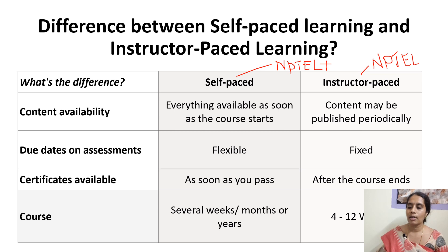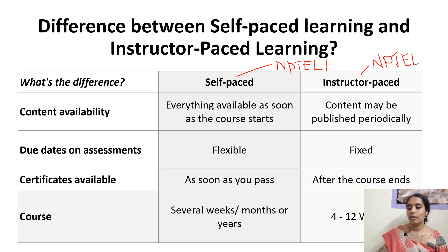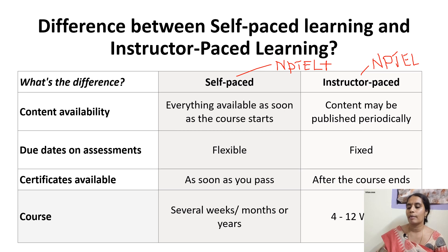Regarding due dates on assessments: instructor-paced learning (NPTEL) has a fixed due date for submissions. Whereas in self-paced learning, there is no fixed due date — you can submit your assignment flexibly. For certificates: in the NPTEL course, after completion and evaluation, it may take around 1 week to 10 days to get your result and certificate. Whereas in self-paced, within minutes of submitting the assignment, you will receive a certificate.